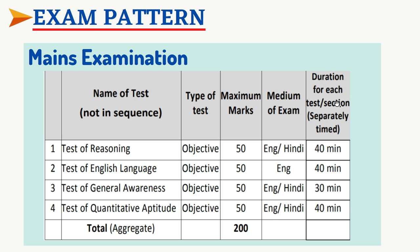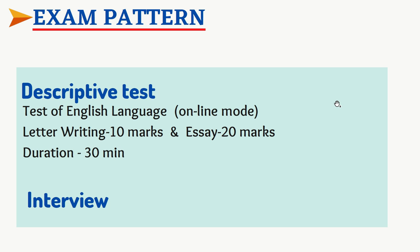There is negative marking of one-fourth for both Prelims and Mains. After Mains, there will be a descriptive test and an interview. The descriptive test includes letter writing worth 10 marks and an English language test worth 20 marks, with a total time of 30 minutes. After that, there will be an interview, and then final selection.